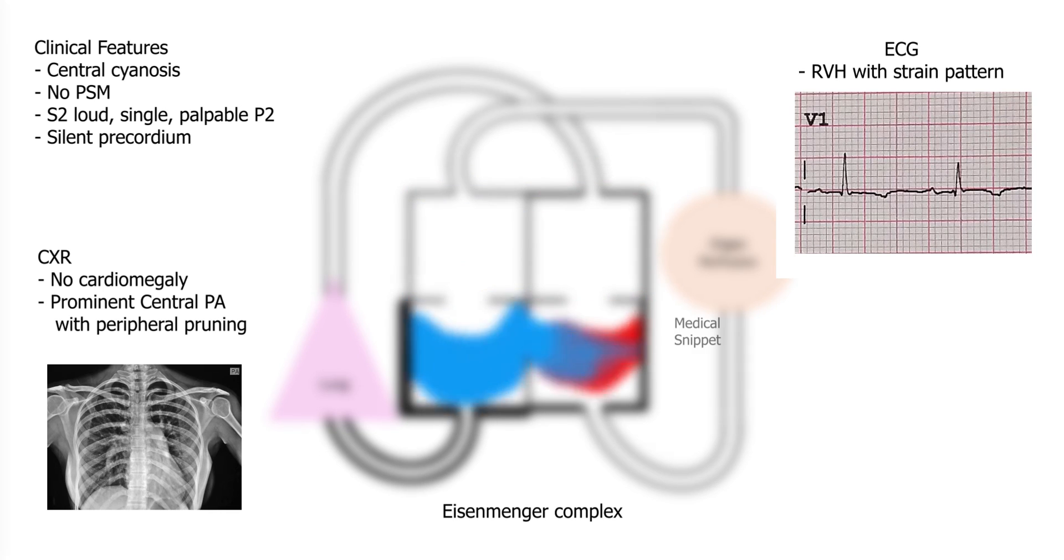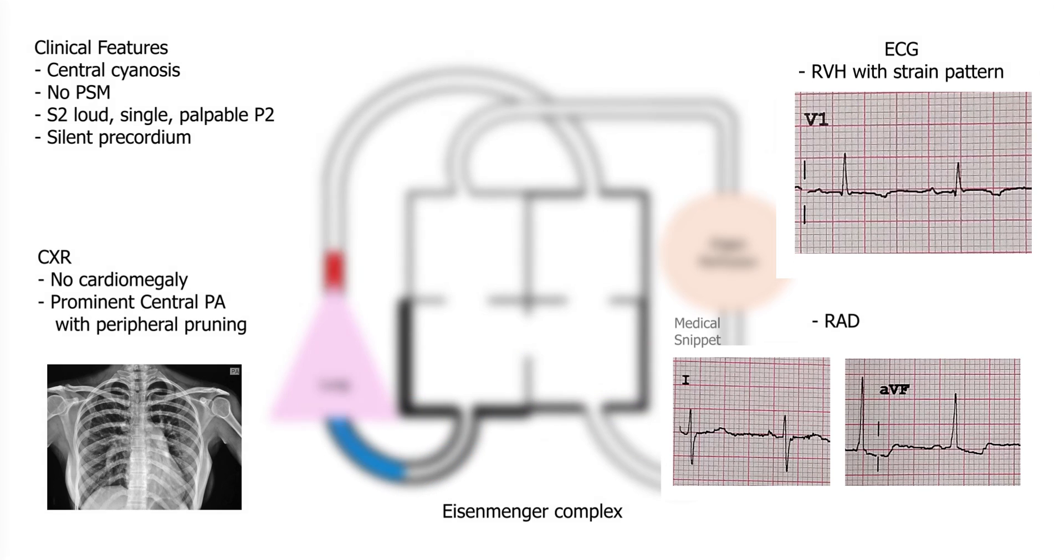ECG shows right ventricular hypertrophy with strain pattern, with right axis deviation.